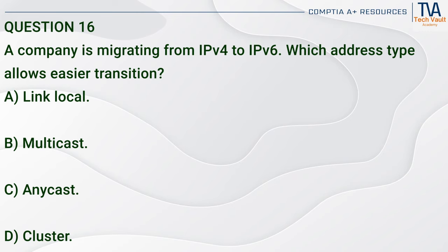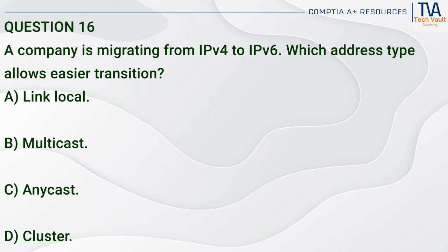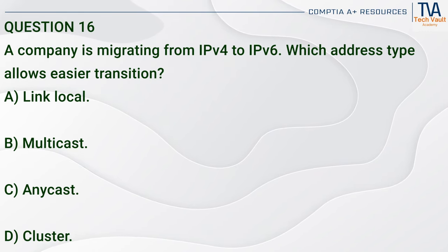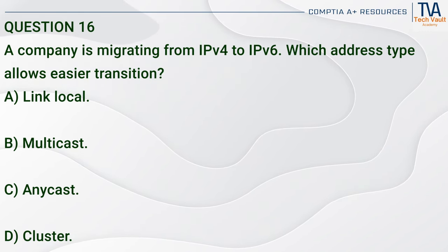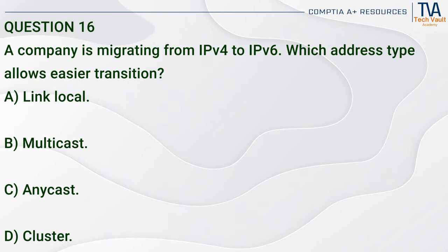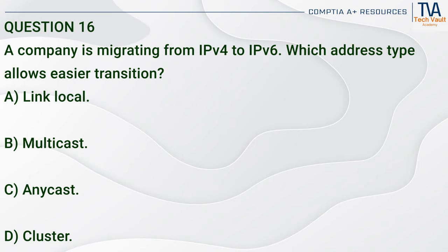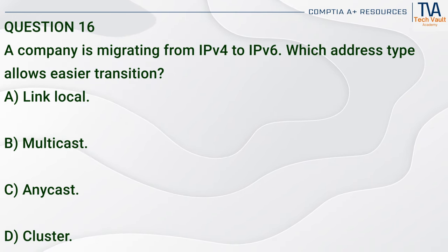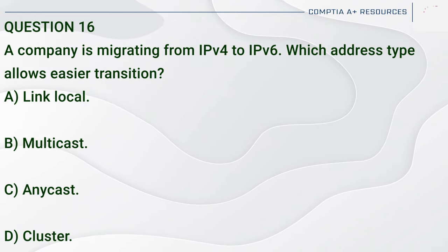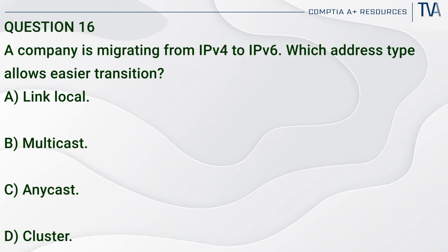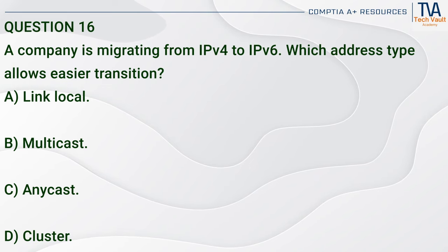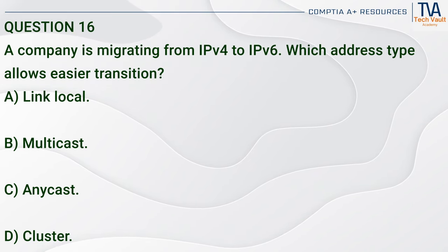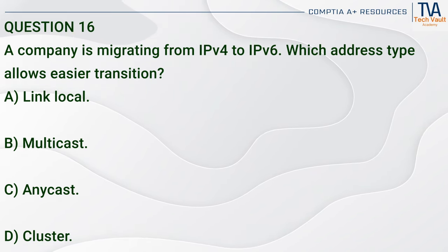Question 16. A company is migrating from IPv4 to IPv6. Which address type allows easier transition? A. Link local. B. Multicast. C. Anycast. D. Cluster.